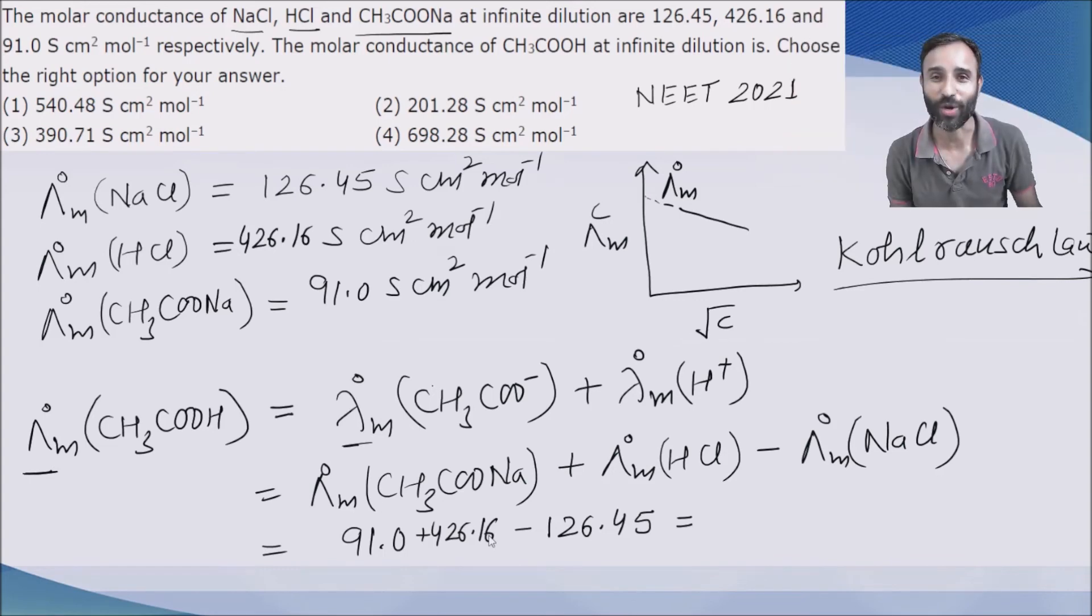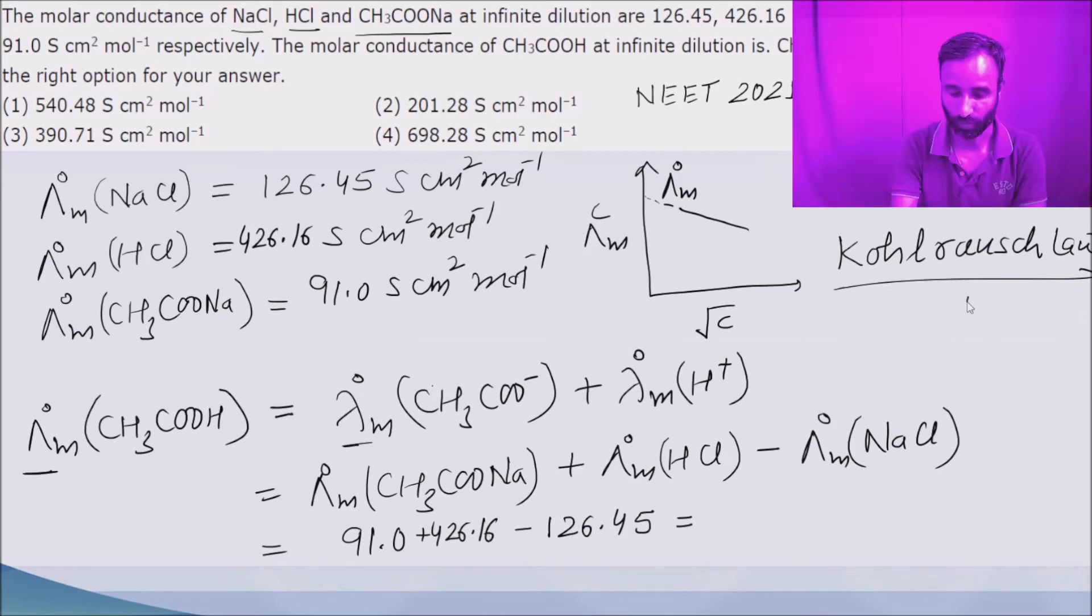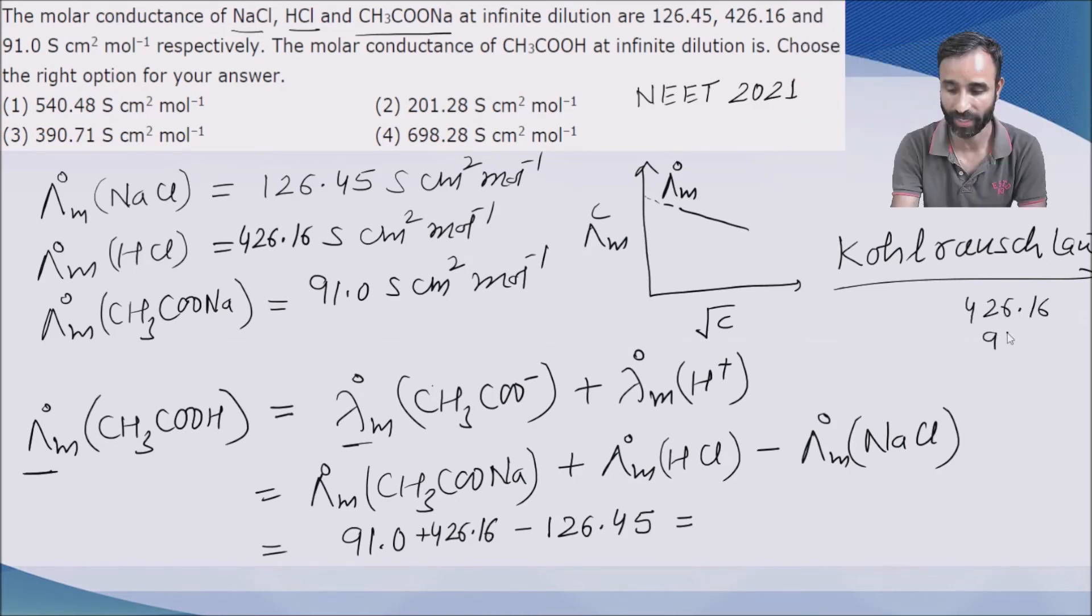And maybe if it comes in these options, you will be getting negative marking. So, 426.16 plus 91.